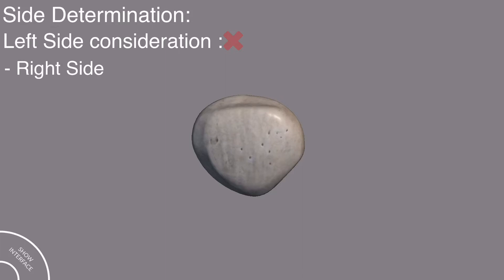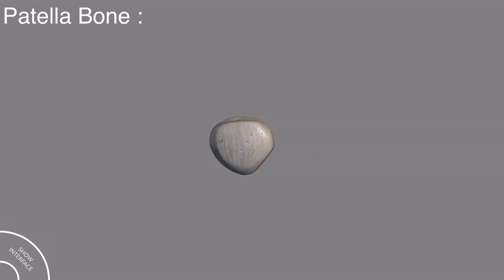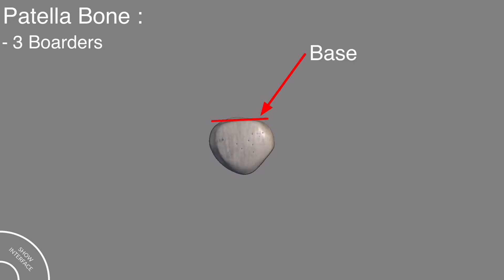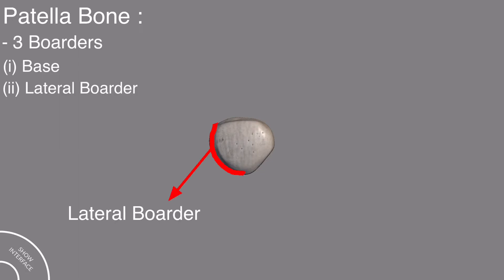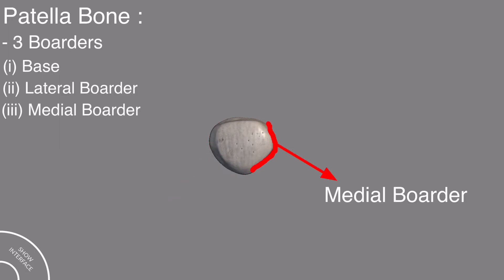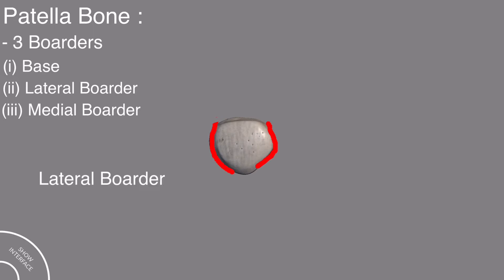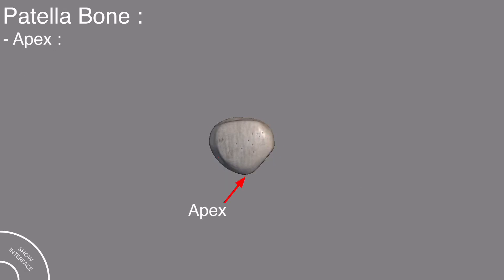This is the right patella bone. The patella bone has three borders and two surfaces. This border is called as the base, this one is the lateral border, and this is the medial border. The point where the lateral and the medial border meet each other is called the apex, and the apex of the patella bone is facing downward to the foot.